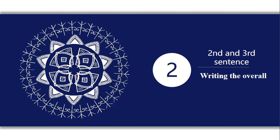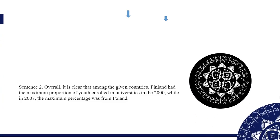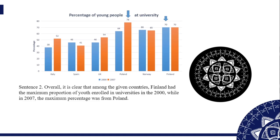The second sentence begins with writing the overall. In order to write the overall, focus on the maximum in each year individually. First, look at the first bar in each country and ignore the second. The first bar represents 2000, shown in blue. In Finland, it accounts for 70%. Then look at the second bar in each country and ignore the first.